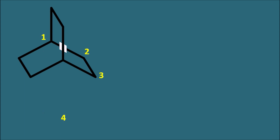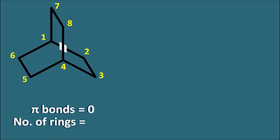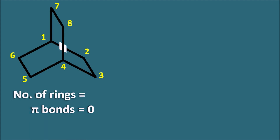Now let us take a bicyclo compound. Numbering the carbons of this bicyclo compound gives us a total of 8 carbons. The number of pi bonds is zero because there is no pi bond in this structure. How many rings are present? Even though it is a bicyclo compound, we can observe three types of rings within it.